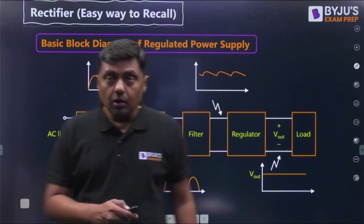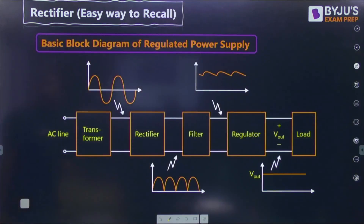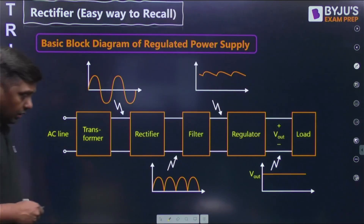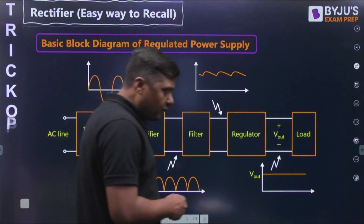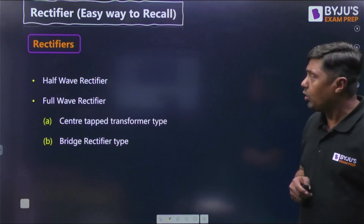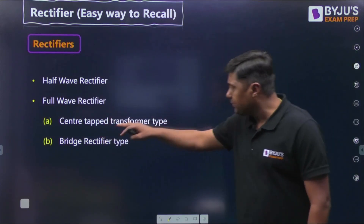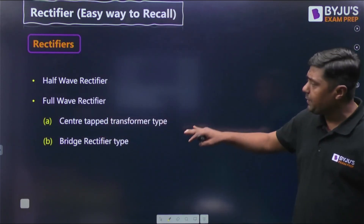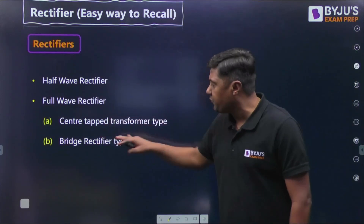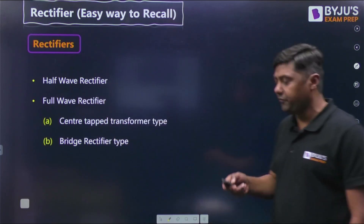Now we will discuss the rectifiers. The first is a half wave rectifier. The second is a full wave rectifier, which comes in two types: center tapped transformer type and bridge rectifier.